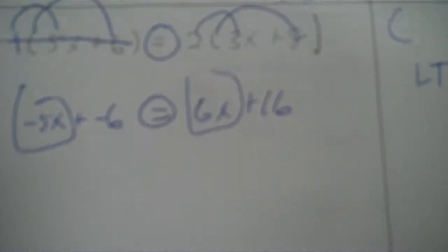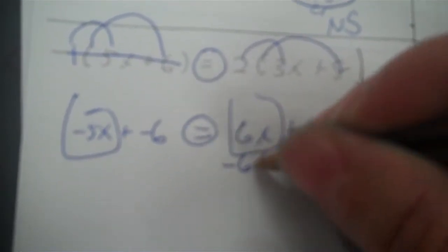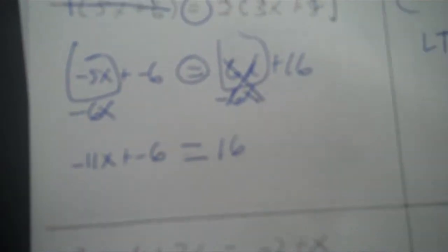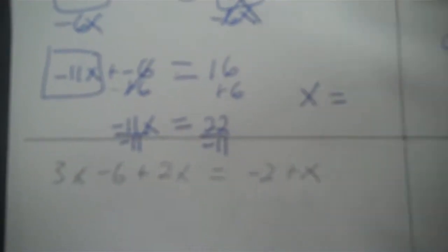Now like terms: I have two x terms, but they're on opposite sides, so I need to balance. I'm going to take that 6x and move it by subtracting it — it goes away there — and subtract it from the negative 5x. Negative 5 minus 6 is negative 11x, plus negative 6, and that's 16. Now outside we have the negative 6, so we add 6 to both sides. Negative 11x equals 22. Then last we divide: 22 divided by negative 11 is negative 2, so x equals negative 2.